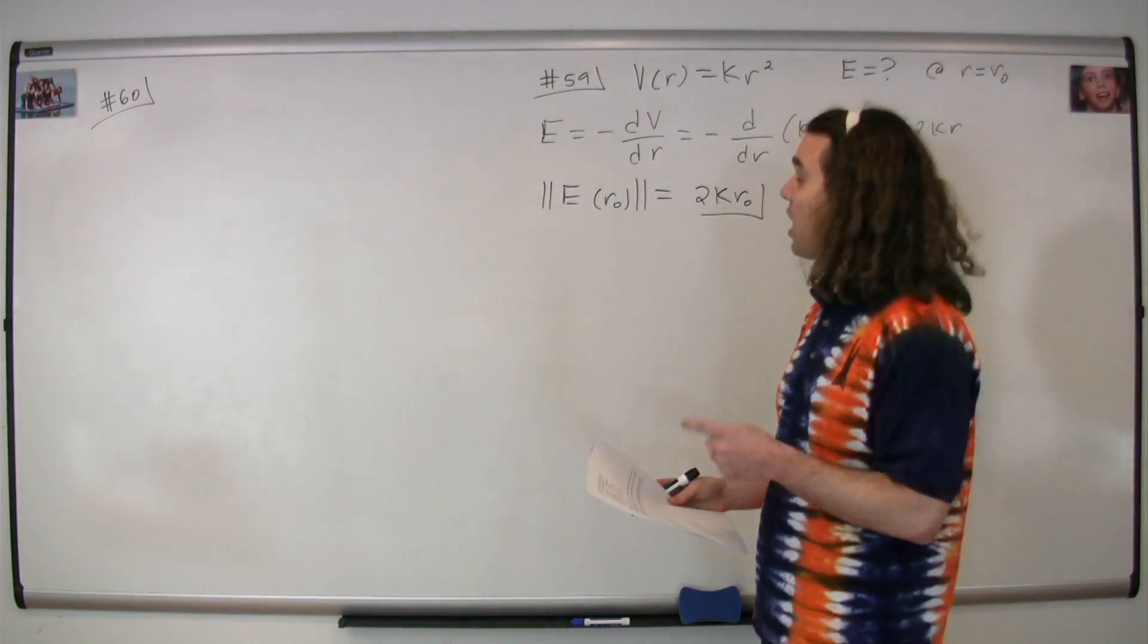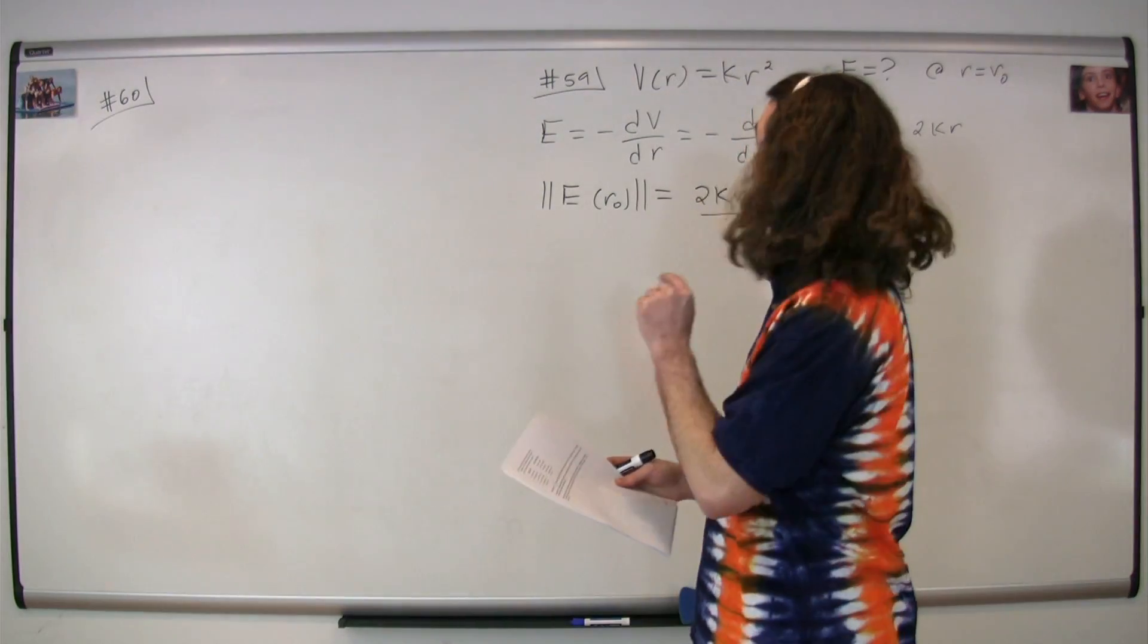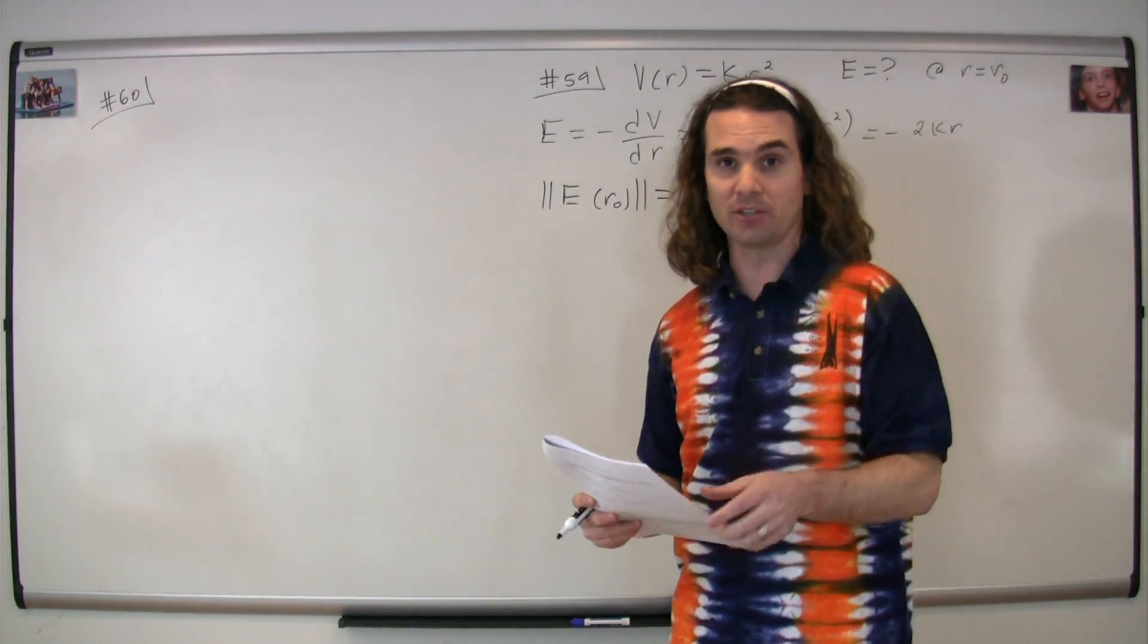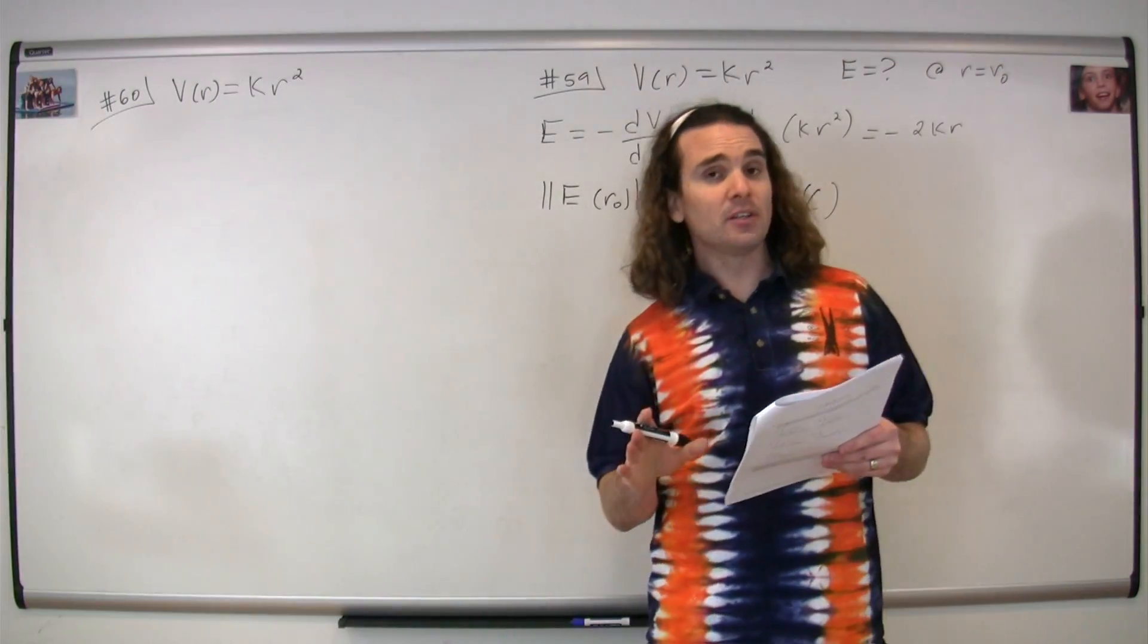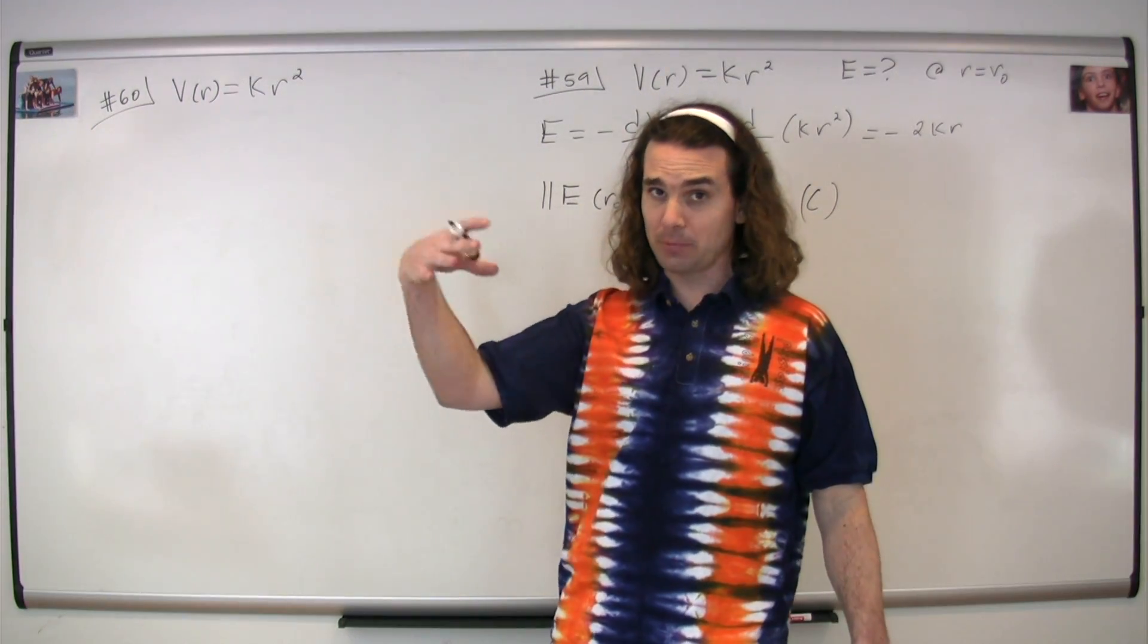Number 60 is an extension of number 59. We still have this equation for the electric potential as a function of position, and we still know that the electric field is equal to the negative derivative of electric potential with respect to position.